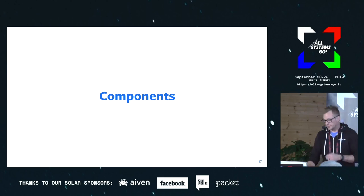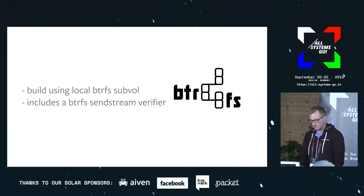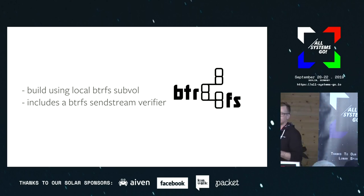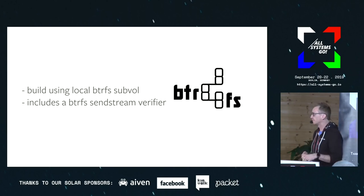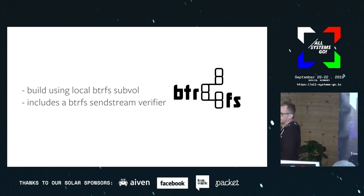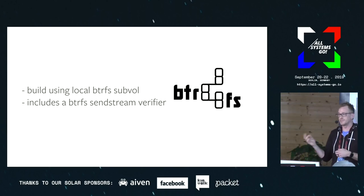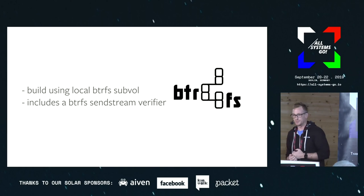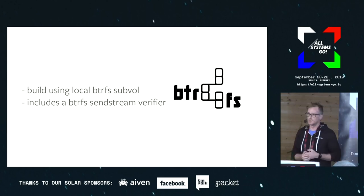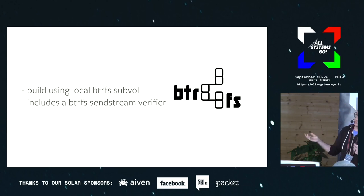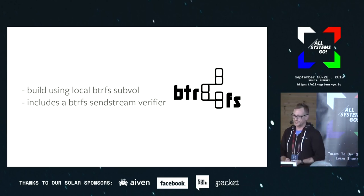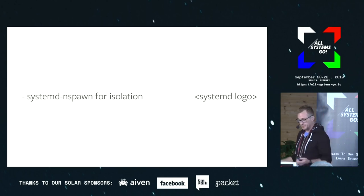So what are the components of this build system? We build using a local ButterFS sub-volume. The whole thing is built around using ButterFS locally to construct the file system. We actually built a ButterFS SendStream verifier with unit tests that parse and understand the extent structure of the SendStream itself. We found a couple of bugs in the SendStream structure and in the kernel using this mechanism. It means we can build a container file system, dump the SendStream of that file system, run it through this verifier, and verify that the SendStream actions being performed are correct based on the build input we have.